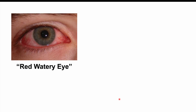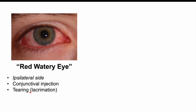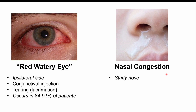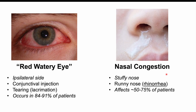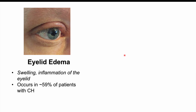During these headache episodes, the eye on the affected side can be red and watery — conjunctival injection with dilated blood vessels in the conjunctiva. There can also be tearing or lacrimation. This red, watery eye occurs in the majority of patients — up to 90%. Nasal congestion or rhinorrhea affects 50% to 75% of patients. Eyelid edema, a swelling or inflammation of the eyelid, occurs in about 59% of patients and appears on the ipsilateral side — the same side as the pain.